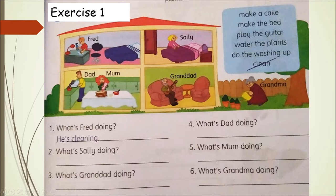You look at the choices given: Make a cake 做蛋糕, Make the bed 收拾床, Play the guitar 弹吉他, Water the plants 浇花, Do the washing up 洗碗, Clean 打扫. So, number one: What's Fred doing?